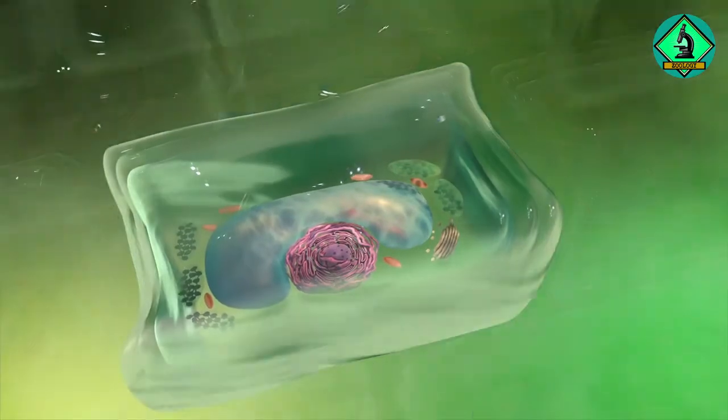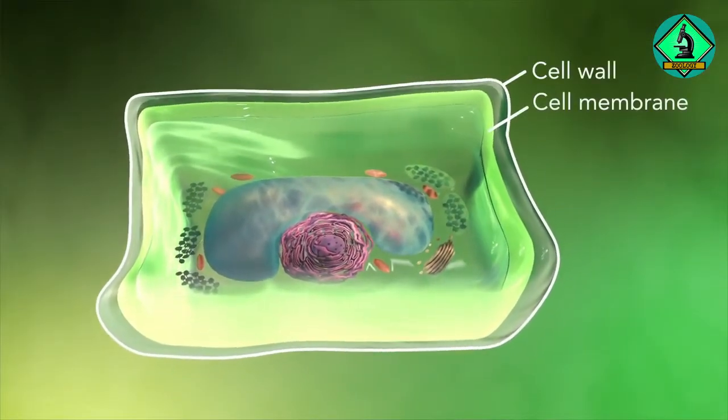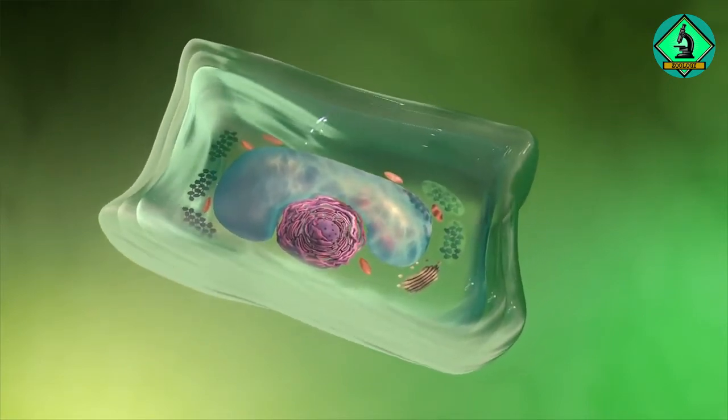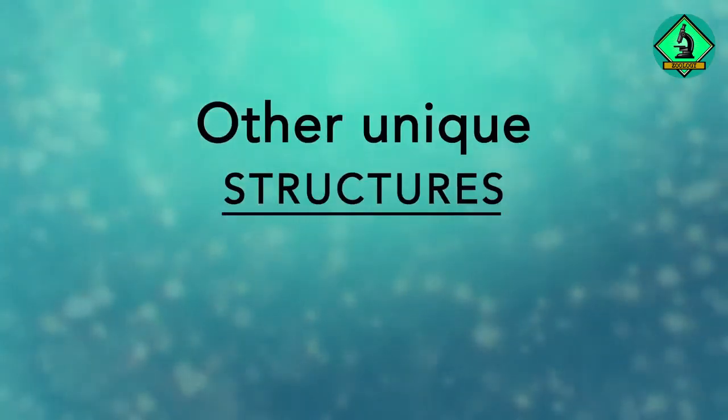Plant cells also have a cell wall outside of their cell membranes that shape, support, and protect the plant cell. Animal cells never have a cell wall. There are many other unique structures that only some cells have.